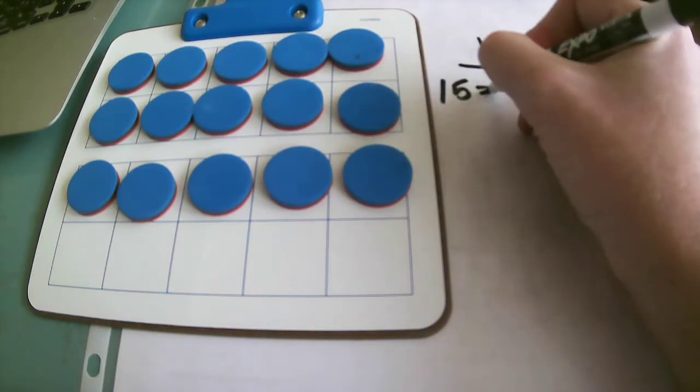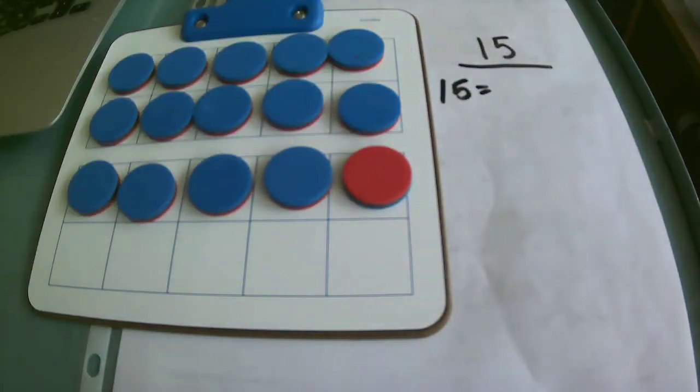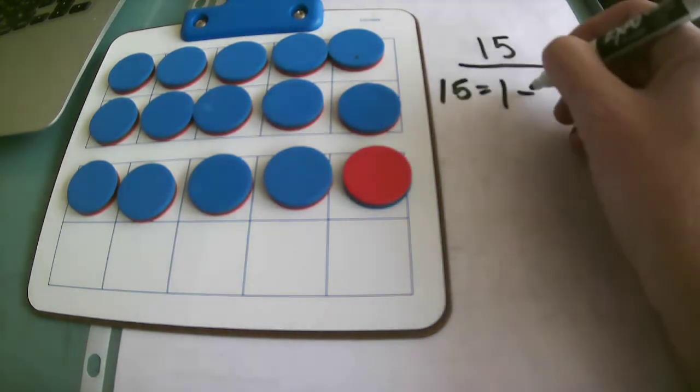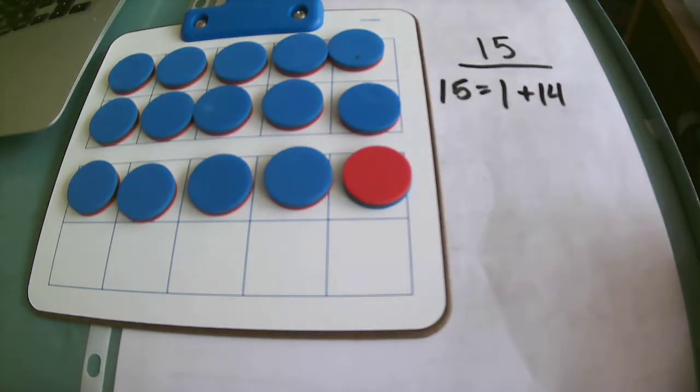If I flip this counter I now have 1 red counter and I have 14 blues. I know that because I have 10, 11, 12, 13, 14. I haven't moved any counters off of my 10 frames, I've just flipped over another color to show different amounts.